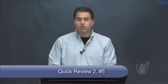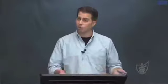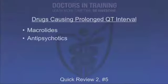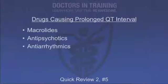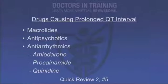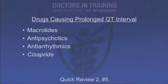Question 5: What drugs are known for causing prolonged QT interval? The short list: macrolides, antipsychotics including chlorpromazine, haloperidol, and risperidone, antiarrhythmic drugs including amiodarone, procainamide, and quinidine, and cisapride — another gut motility agent. So macrolides, antipsychotics, antiarrhythmics, and cisapride are the ones to know for QT prolongation.